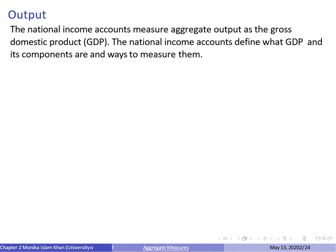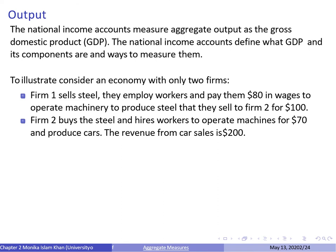When economists look at aggregate measures of economic activity, the first one they look at is output. Interestingly, economists during the Great Depression didn't have access to any measures of economic activity. In fact, it wasn't until 1947 that national income and product accounts were drawn. Today, output is measured using gross domestic product or GDP. The national income accounts define what GDP is, what its components are, and how to measure them.